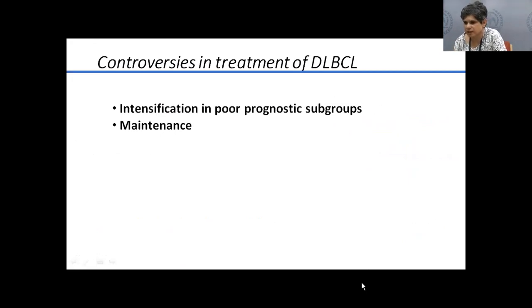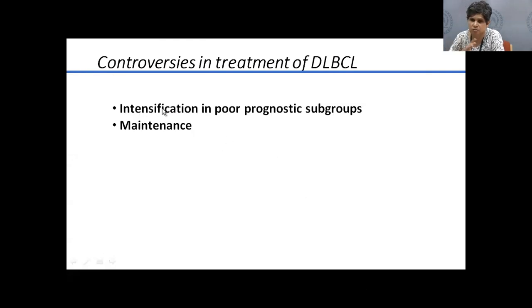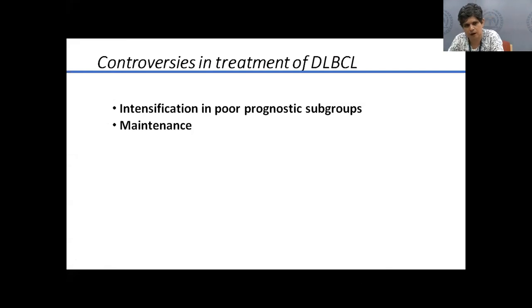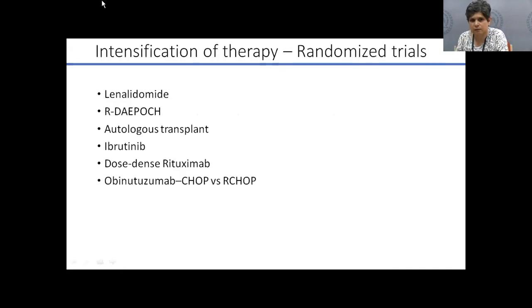Controversies in DLBCL management include whether to intensify therapy for double-expressor and double-hit lymphoma subgroups. Despite numerous trials adding different agents with all forms of intensification, nothing has proven superior to R-CHOP. Maintenance therapy — continuing rituximab after remission — is not standard in DLBCL, unlike in follicular lymphoma. For intensification of high-risk subgroups, the current standard remains R-CHOP.